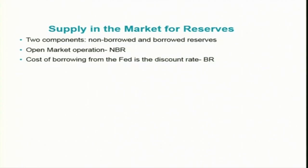Coming to the supply part — supply in the market for reserves — as mentioned in a previous session, supply in the market for reserves comes directly from the Federal Reserve System. There are two components: one is non-borrowed reserves and the other is borrowed reserves. Non-borrowed reserves come through open market operations, that is through the purchase and sale of government securities by the Federal Reserve System. The second component is through the discount window using the discount rate — the central bank lends to member banks, and that is called borrowed reserve.